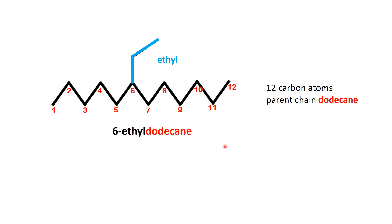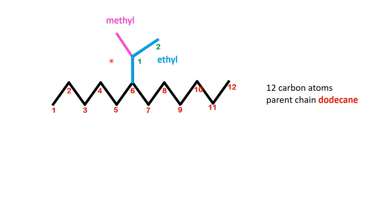Now let's make it more interesting. What if we modify the substituent and turn it into a complex substituent? Imagine that the ethyl group itself has a branch — a methyl group attached to its first carbon. To name this complex substituent systematically, follow these steps. First, identify the longest chain within the substituent; in this case, the ethyl group serves as the base chain. Next, number the carbons in the ethyl chain, starting with the one attached to the main chain as the first carbon. Here, a methyl group is attached to the first carbon of the ethyl chain.